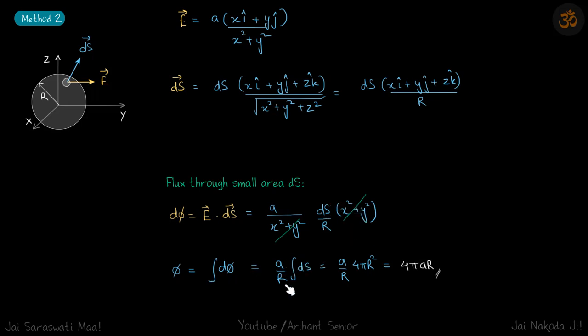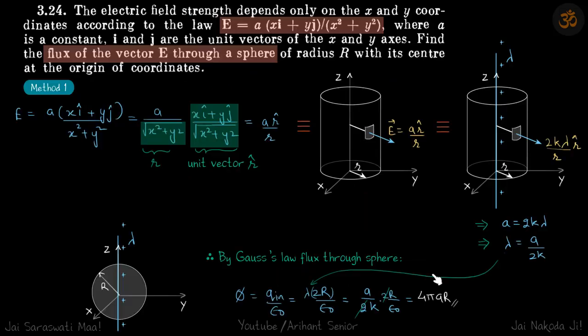You will get flux as integral of this d phi, which is a by r integral of ds. Integral of ds over the whole sphere is 4 pi r square, which becomes 4 pi a r, which is same as our answer here.